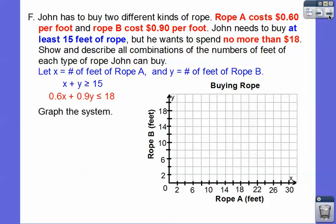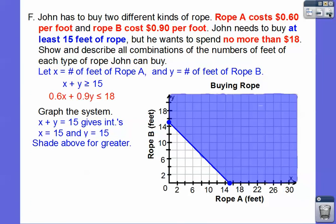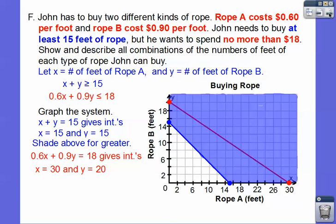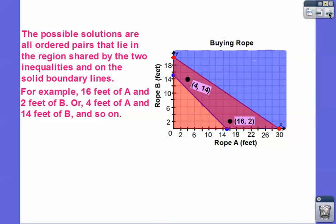Let's go ahead and graph that system. X plus Y equals 15 gives 15 and 15. This one's greater than or equal to, so it's just like the last one, we're going to shade above it. This one gives the intercepts of X equals 30 and Y equals 20, and that one's less than or equal to, so we're going to shade below it. Our answer is going to be any point that lies inside of that double shaded region. There's just a couple of examples, 4 comma 14, 16 comma 2. So 4 comma 14 means 4 feet of rope A and 14 feet of rope B, or 16 feet of rope A and 2 feet of rope B, or anything that lies in this double shaded region.